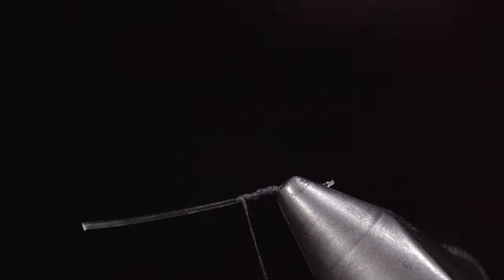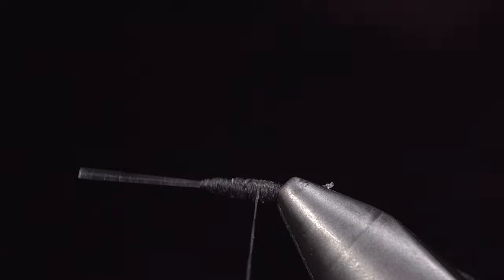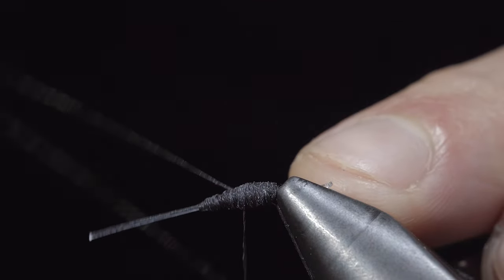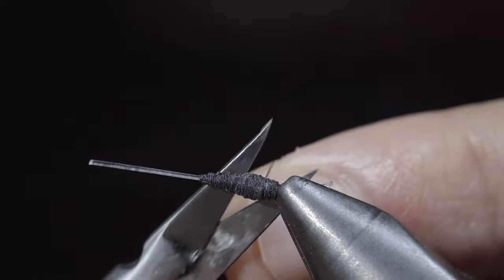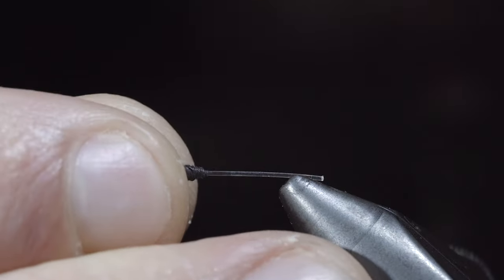We will then begin building up a thread base, much larger than the head we just completed, as this section will be the ant's gaster. Once complete whip finish, seat your thread and snip the excess free. We'll remove the monofilament from the vise, snipping off the extra monofilament.